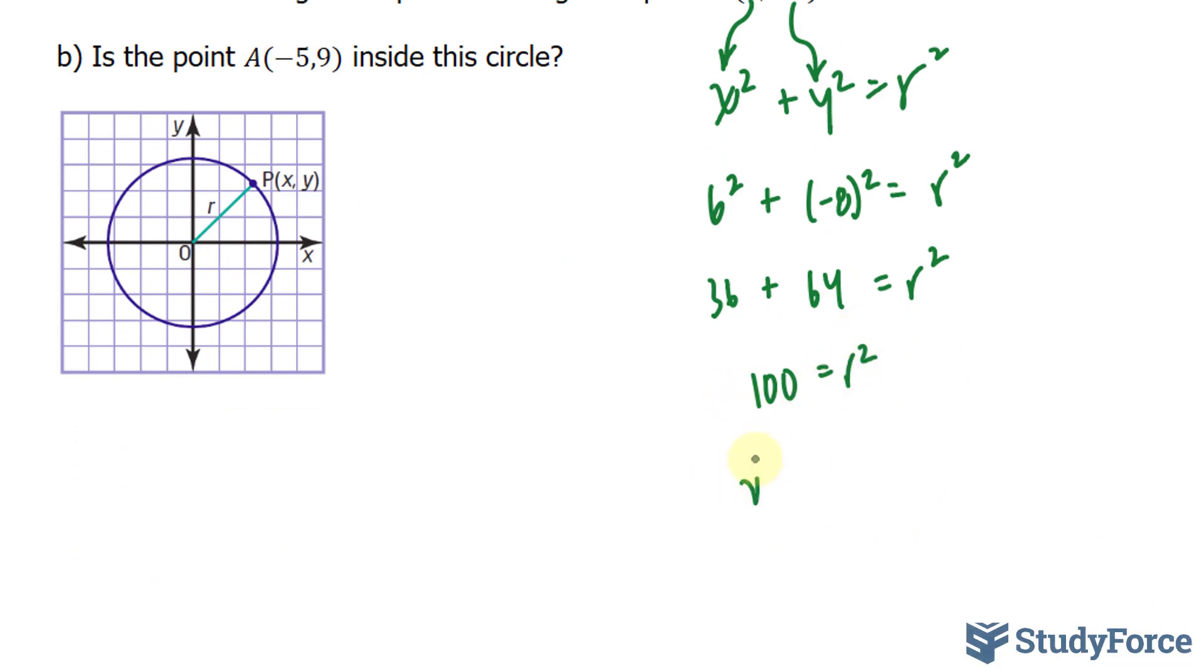Square rooting both sides, we end up with the square root of 100 is equal to r. And r is equal to 10.